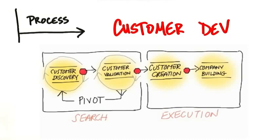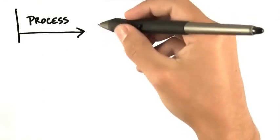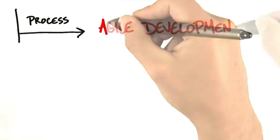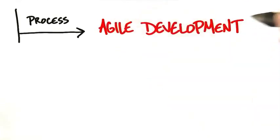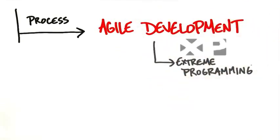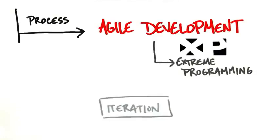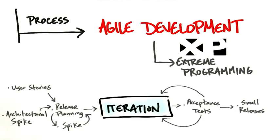The other piece that goes with the process in a startup is not only the customer development process, but an agile engineering process. One example is extreme programming, or XP, which is built around this idea of iteration and incremental delivery of the product. This is a big idea.